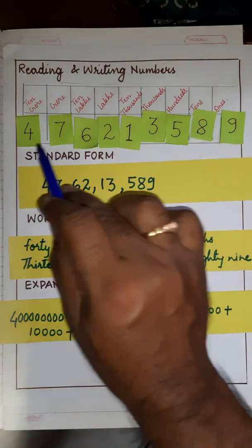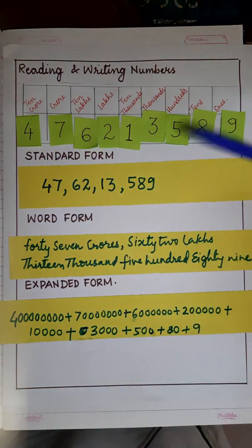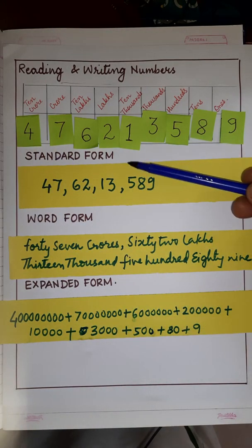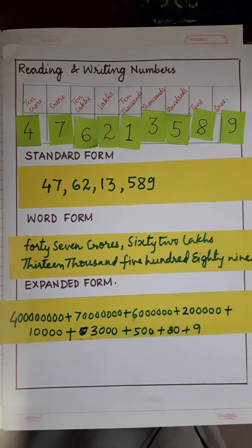So, for every number, we can write it in three different forms. One is standard form, one is word form, one is expanded form. Okay children, now suppose I change the number. How will we write the standard form and word form and expanded form? One more example I would like to give.